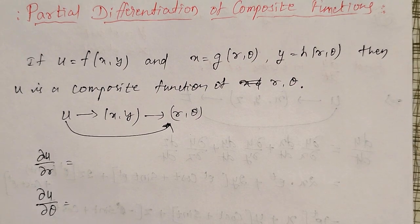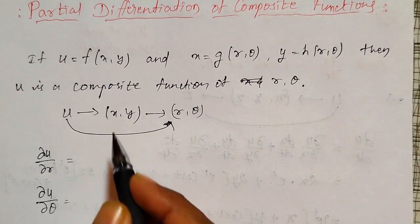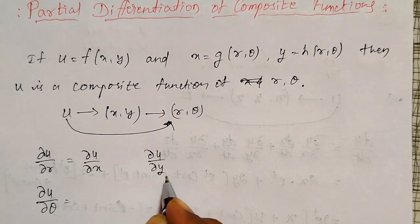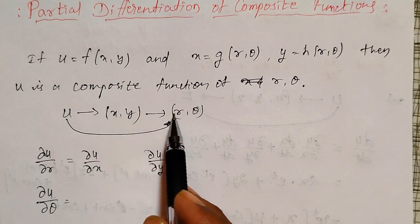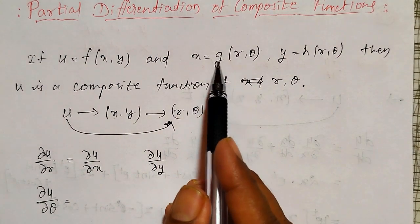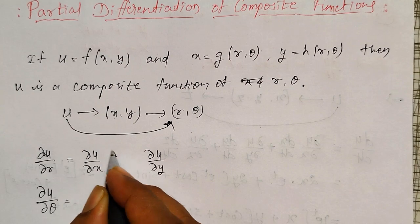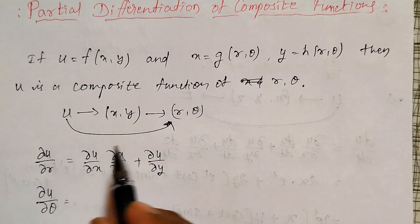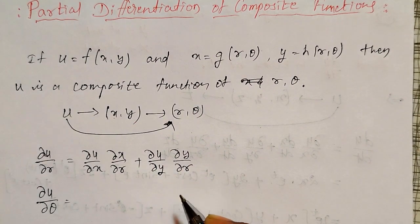Let me define them. First, u is a function of x and y, therefore there exist two partial derivatives: ∂u/∂x and ∂u/∂y. But I want to take the partial derivative with respect to r. We know that x is a function of r and θ, therefore for x there exists a partial derivative ∂x/∂r. Therefore: ∂u/∂r = (∂u/∂x)(∂x/∂r) plus (∂u/∂y)(∂y/∂r), since y is also a function of r and θ.